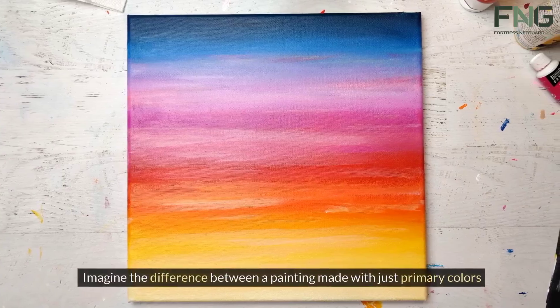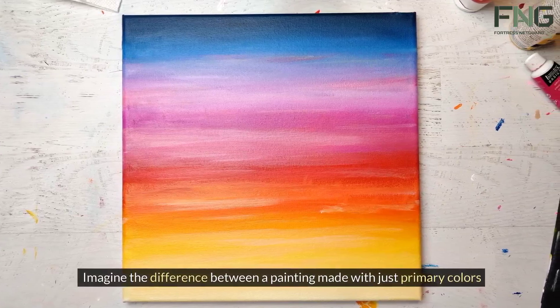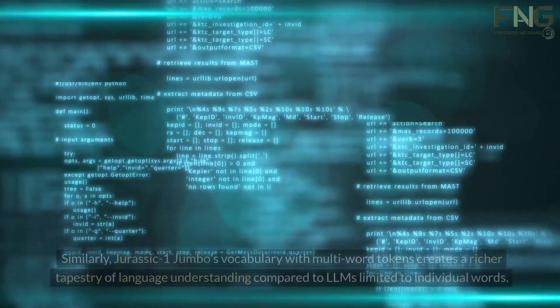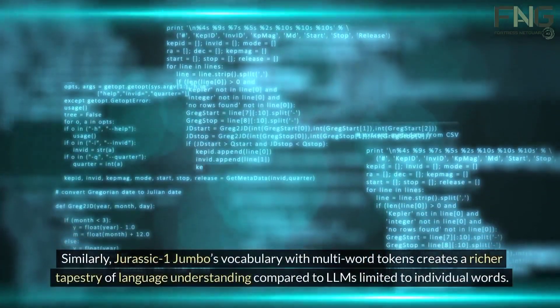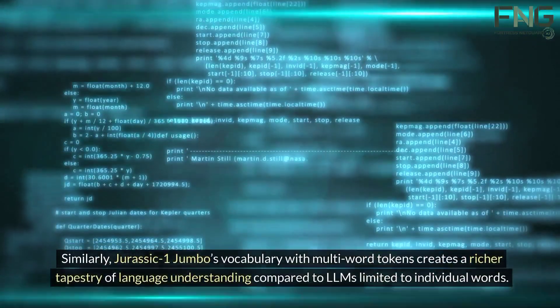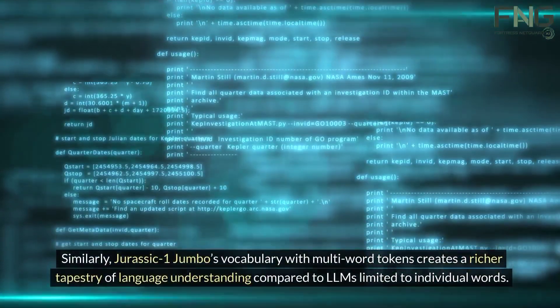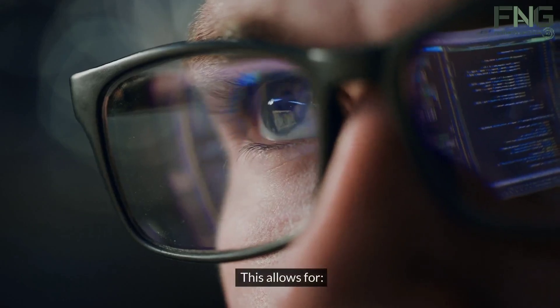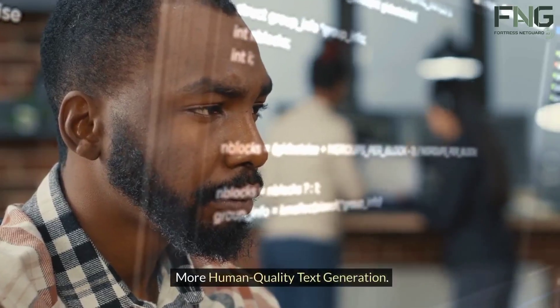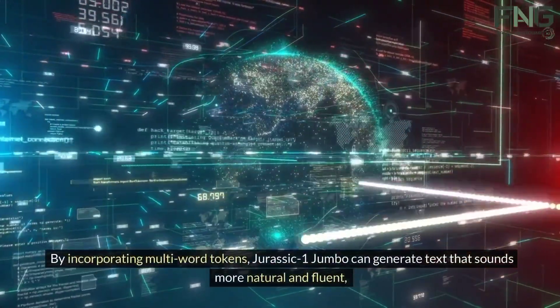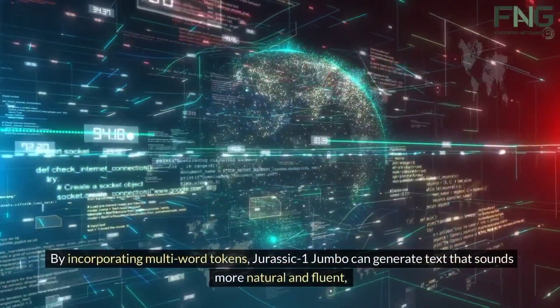A richer tapestry of language: Imagine the difference between a painting made with just primary colors and one that utilizes a full spectrum. Similarly, Jurassic-1 Jumbo's vocabulary with multi-word tokens creates a richer tapestry of language understanding compared to LLMs limited to individual words.